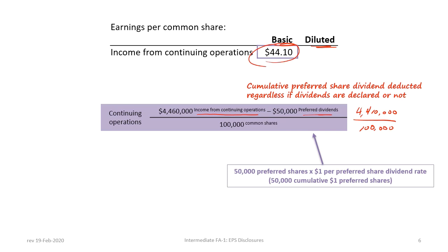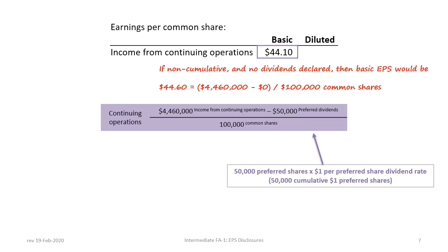Refer to the data — you'll see 50,000 preferred shares times $1 per preferred share dividend rate. If the dividends were non-cumulative and no dividends were declared, then the basic earnings per share would be $44.60, as the common shareholders would be entitled to all of the earnings, no preferred dividends would be paid out, and the preferred dividend deduction would be zero.